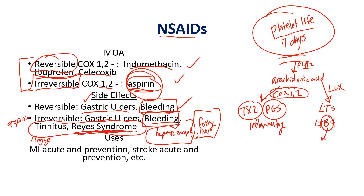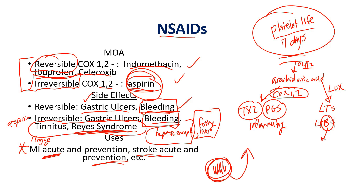The uses: NSAIDs have tons of uses. Just know they can be used in myocardial infarction or heart attack in acute situations. Prevention of heart attacks — many patients are on aspirin for that. Acute stroke and stroke prevention. For example, plaque buildup on cardiac chambers, mitral valve vegetations that can break off, atrial fibrillation from mitral stenosis causing blood stasis in the left atrium, which can throw emboli to the brain — that's why aspirin can be used in acute stroke and stroke prevention.